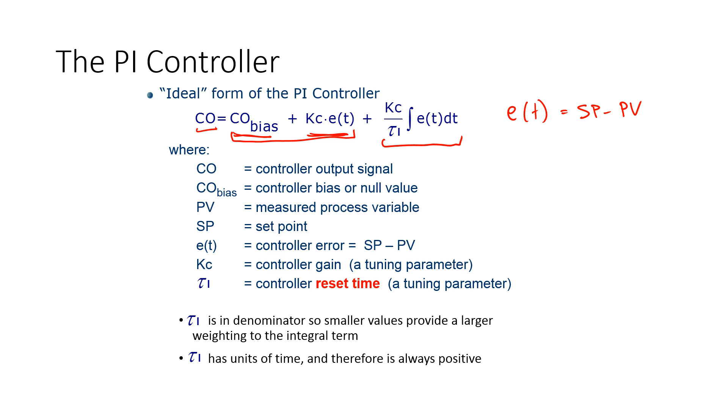Now we're going to be adding an integral term as well. It's going to integrate this error over time and add or subtract a certain amount from the controller output based on the integrated time. We're going to add a new time constant, tau sub i, and that is in the denominator. So smaller values provide a larger weighting to this overall integral term. It also has units of time, and therefore it's always positive.